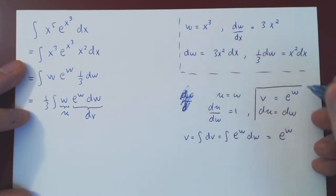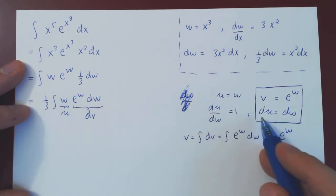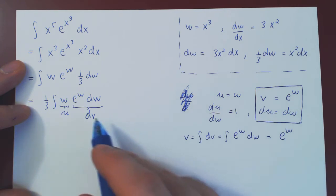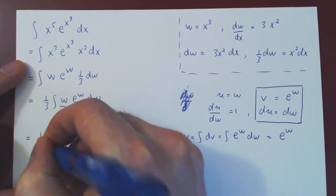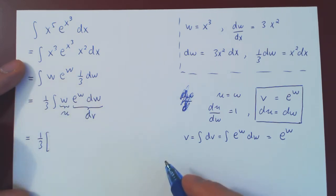And now, we have what we need for our integration by parts. We have our u, we have our du, we have our v, we have our dv. So, we're good to go. Open up your brackets, though, because the one-third multiplies the whole thing.